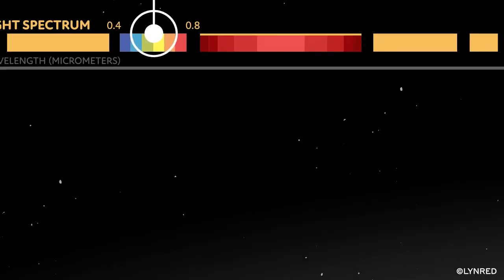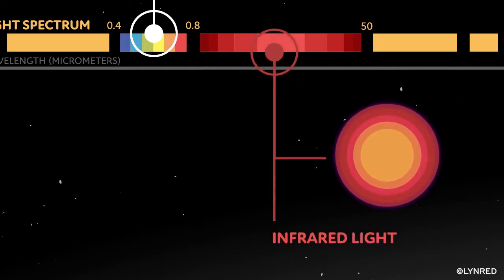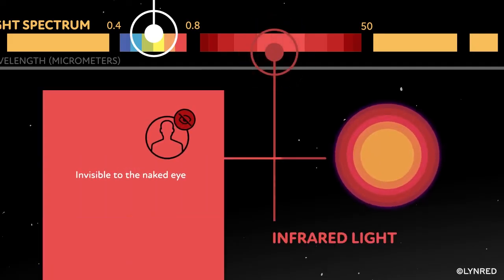Light whose wavelengths are between 0.8 and 50 micrometers is infrared light, which is invisible to the naked eye.